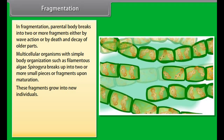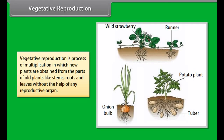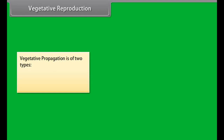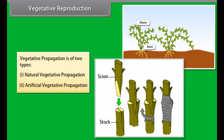In fragmentation, the parental body breaks into two or more fragments either by wave action or by death or decay of older parts. Multicellular organisms with simple body organizations such as filamentous algae like Spirogyra break up into two or more small fragments. Upon maturation, these fragments grow into new individuals. Among animals, flatworms also show fragmentation. Fragmentation is found in algae such as Spirogyra.